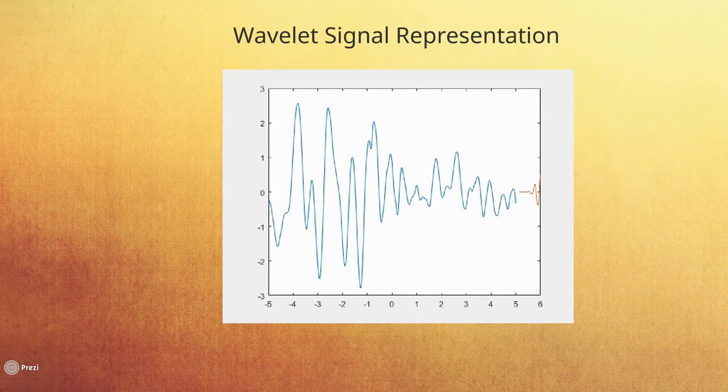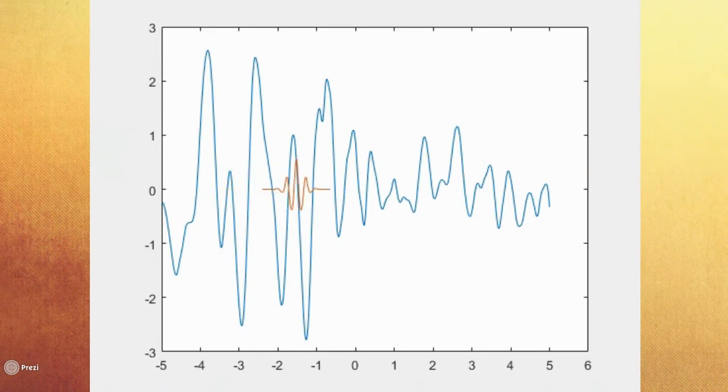We operate on the signal with a wavelet in order to generate a set of coefficients, which displays the similarity between the wavelet and the signal. These coefficients create a new representation of the original signal containing time and local frequency. This process is referred to as the wavelet transform, and it is the foundation of the wavelet scattering transform.